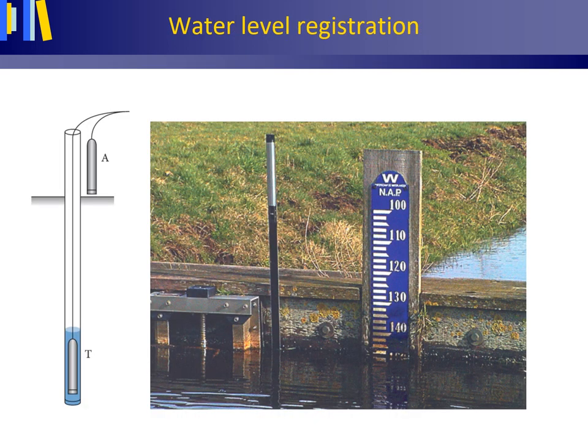To measure the water height, increasing use is made of pressure sensors. A pressure sensor is lowered in a pipe that has openings to enable water to flow in. The sensor is lowered to the bottom of the stream to measure the total pressure, which equals the water pressure plus air pressure. Another pressure sensor is positioned above the water to measure the air pressure. The difference between the total pressure and air pressure gives the water pressure, which is linearly related to the water height or stage. A similar setup was described earlier for determining the hydraulic head of groundwater in a piezometer. The photo shows part of such a setup with a pressure sensor to measure the air pressure on top, plus a staff gauge — a graduated scale — that can be manually read off and used as a check.